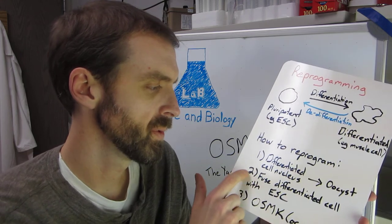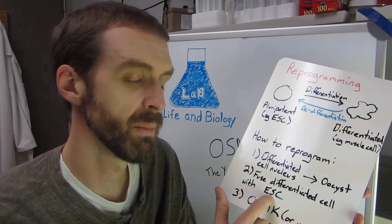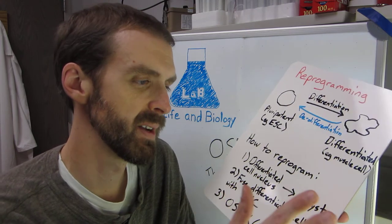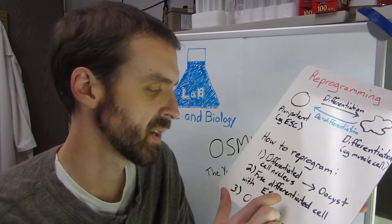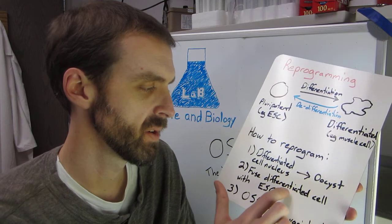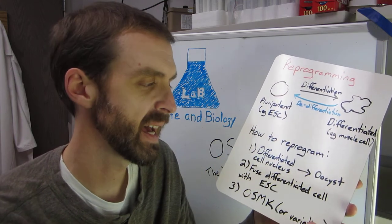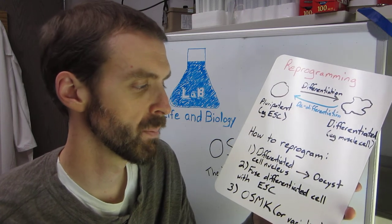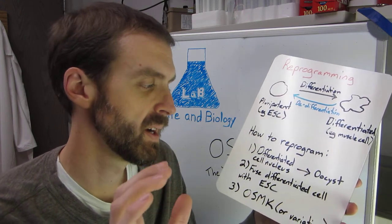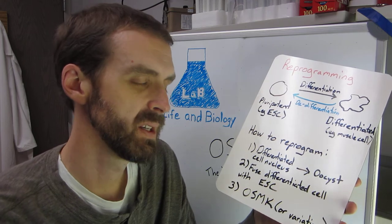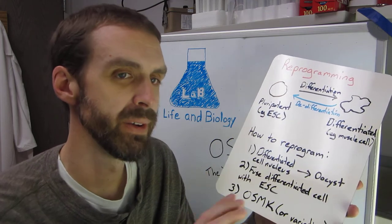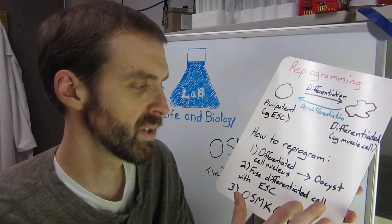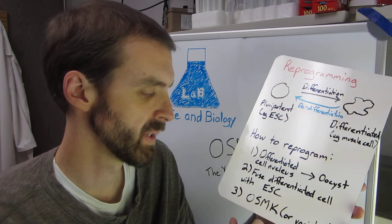You could also fuse a differentiated cell with an embryonic stem cell. So there's different ways of putting cells together and making them fuse into one cell. And if you do that, then your differentiated cell nucleus that has all these patterns, epigenetic marks and all these things going on, it will get de-differentiated back to having the ability to turn into anything. So those are the two that they mentioned in the first sentence of this Yamanaka paper.